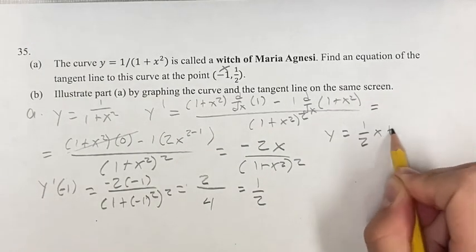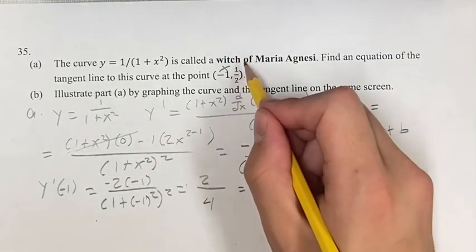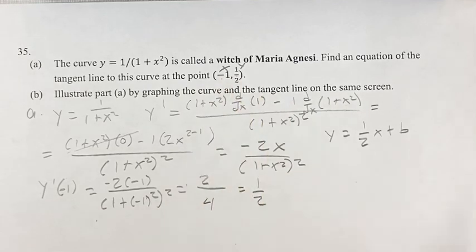y equals 1 half x plus b, equation of a line in slope-intercept form. We know that this equation is true when x is negative 1 and y is 1 half, since that's a point on the line.